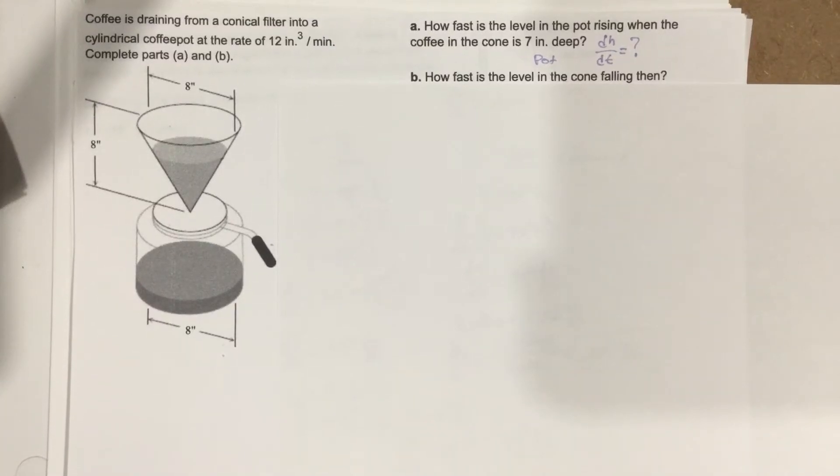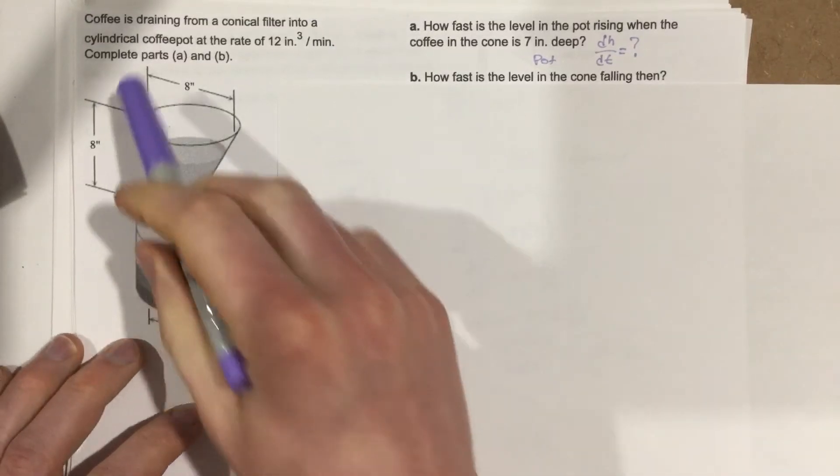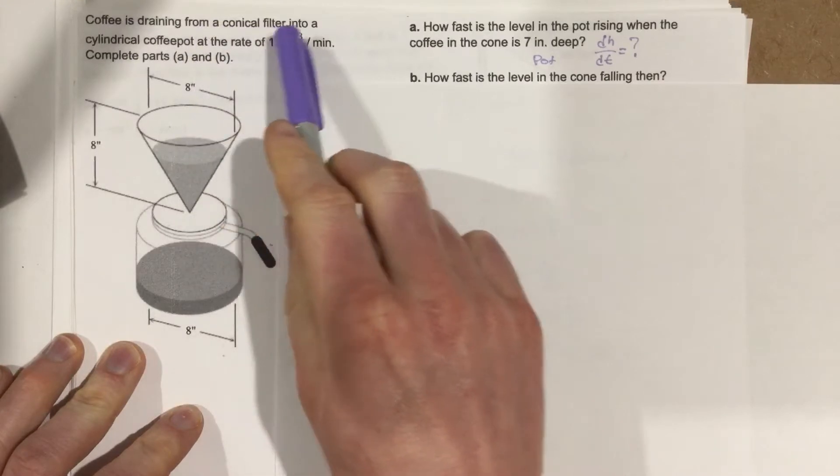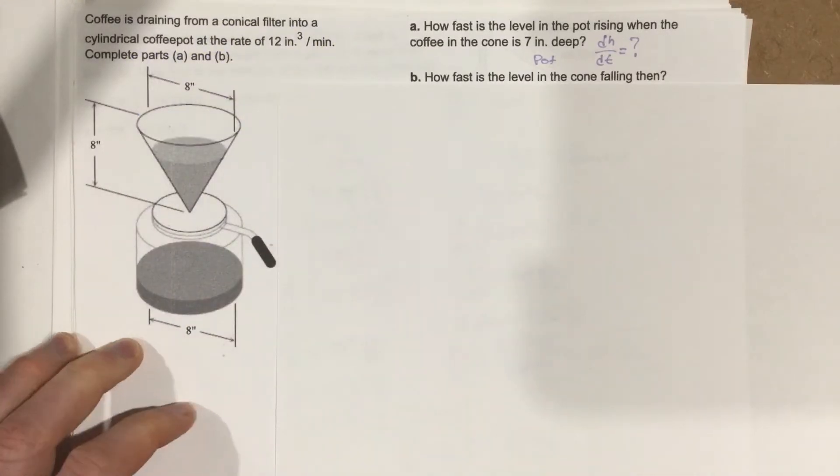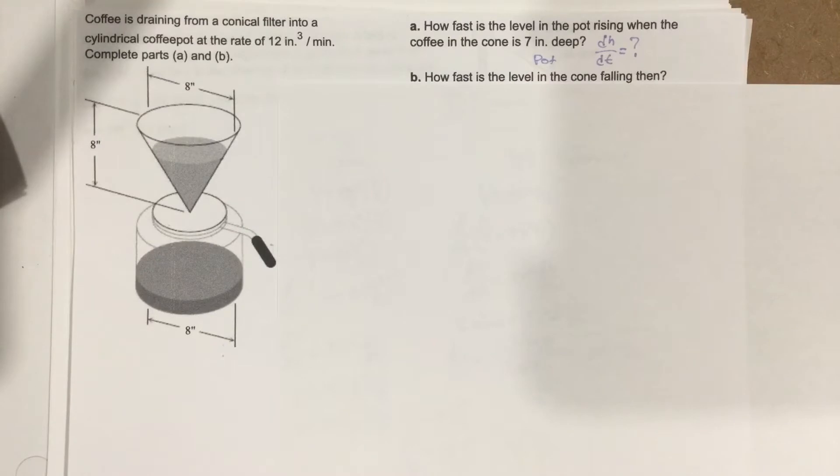This is problem number nine from section 310. In this problem, coffee is draining from a conical filter into a cylindrical coffee pot at a rate of 12 inches cubed per minute. Complete parts A and B.